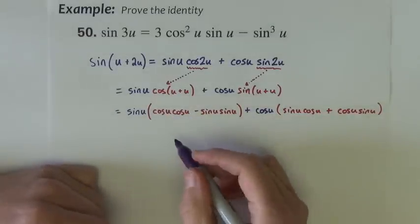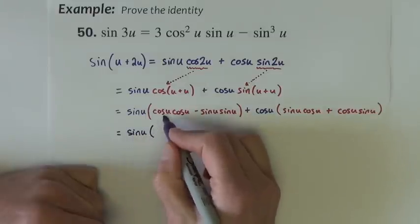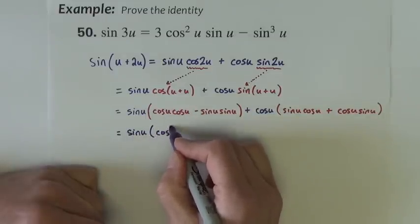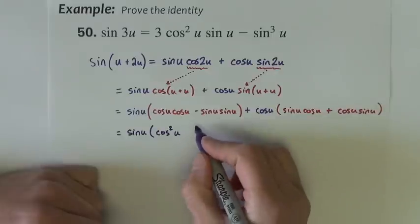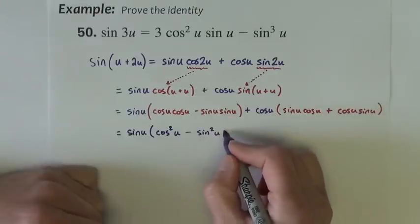Alright, now let's work inside each set of parentheses for now. We've got sine u times cosine u, cosine u is cosine squared u, minus sine u, sine u is sine squared u, plus,